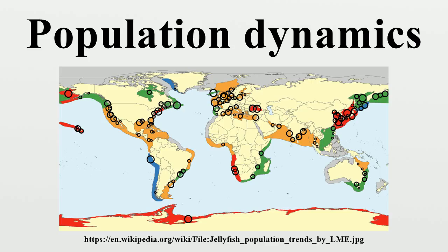Exponential population growth describes unregulated reproduction. It is very unusual to see this in nature. In the last 100 years, human population growth has appeared to be exponential, though in the long run it is not likely. Paul Ehrlich and Thomas Malthus believed that human population growth would lead to overpopulation and starvation due to scarcity of resources, and that human population would grow at a rate exceeding the ability of humans to find food.